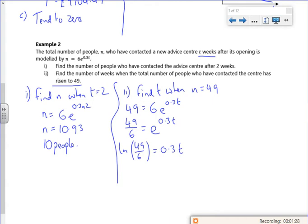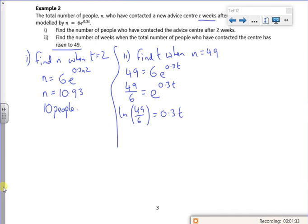0.3 is 3 over 10. So if I switch it on the other side, it'll be 10/3 times ln(49/6). Because 0.3 is 3/10, I'll multiply by 10 divided by 3. That will give me roughly 7 months. So that's that one done.